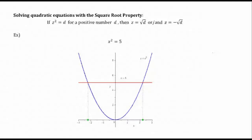In this video, I'm going to discuss the square root property for solving quadratic equations. Stated here: if you have a quantity like z squared equals a positive number, then that quantity must be equal to the square root of d or the negative square root of d.